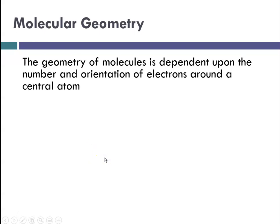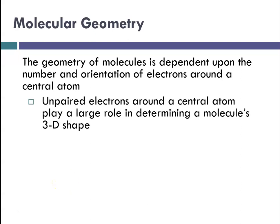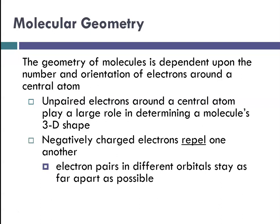When we talk about molecular geometry, we have to understand that the geometry of molecules is going to be dependent upon the number and the orientation of the electrons around a central atom. We're talking about bonding as well as non-bonding electrons. Unpaired electrons around a central atom play a very large role in determining the molecule's three-dimensional shape.